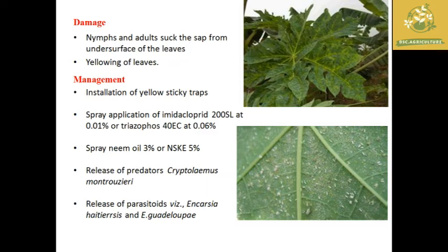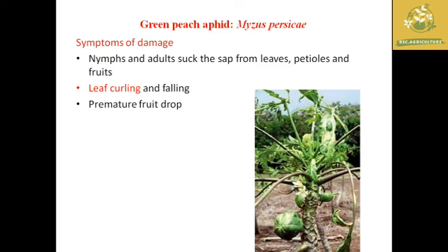We can also use natural sprays like neem oil 3% or neem seed kernel extract 5% at the field level. Additionally, we can release predators like Cryptolaemus montrouzieri and parasitoids like Encarsia haitiensis or Encarsia sophia species at the field level, which are effective against whiteflies.